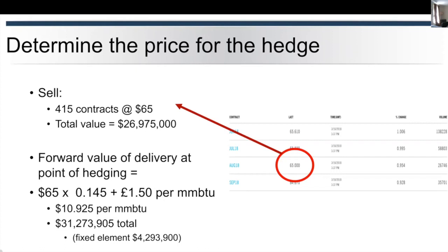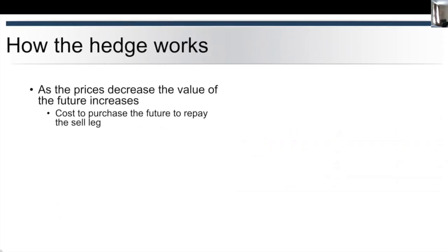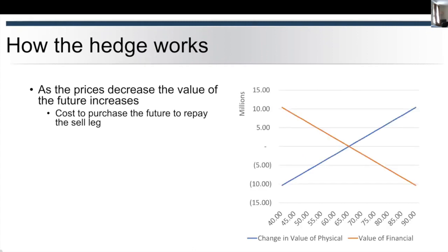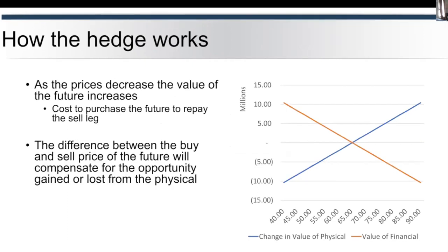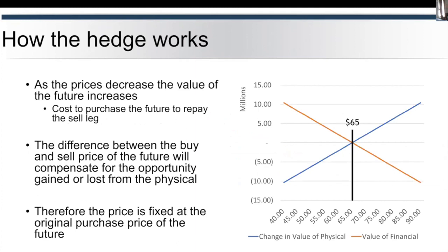So how does the hedge actually work? You've sold futures so you've got an obligation to buy those back in the future, but you're also selling on the index as well. As the price decreases, the value of the future will increase, so the cost to purchase the future to repay this sell leg allows us to see: as the price of the physical gas goes up, we can see the value of the financial future going down. One will offset the other, which will end up giving us the equivalent of a fixed price at $65.